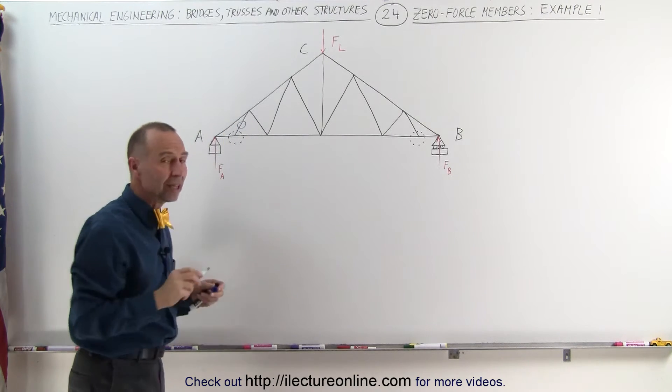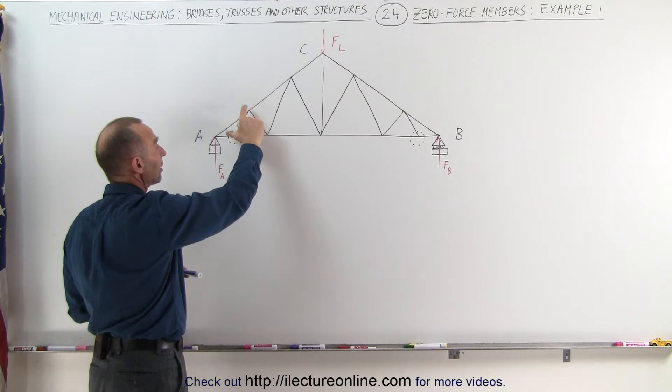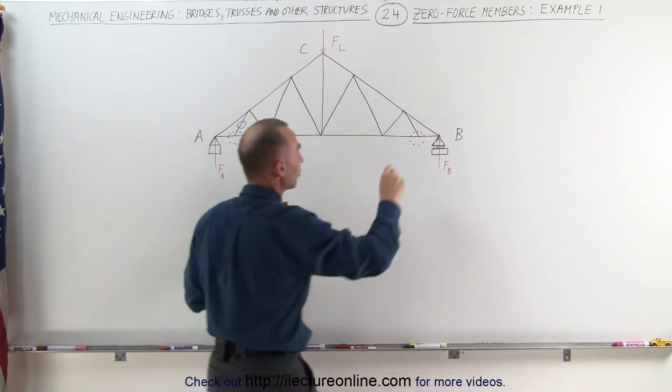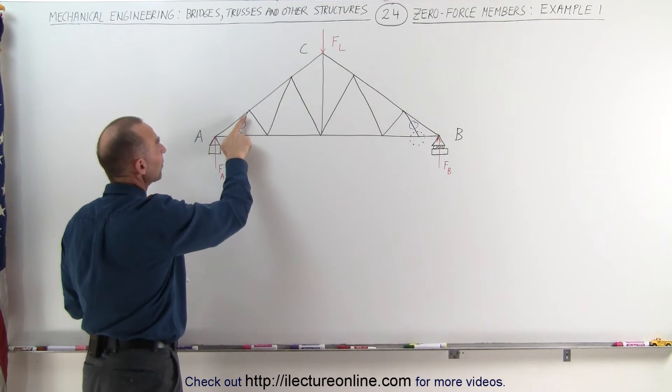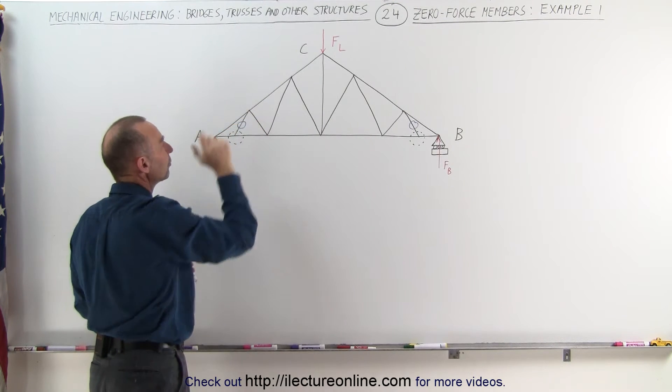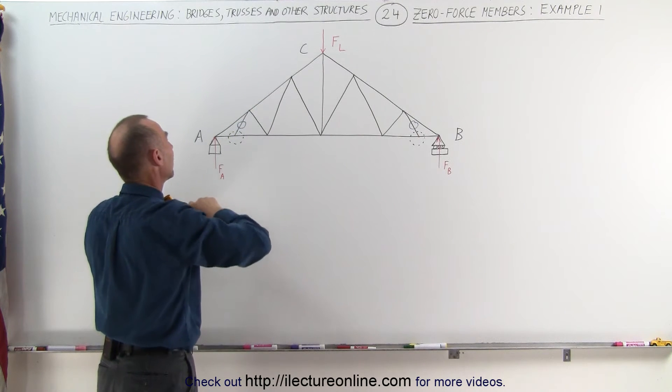Now the interesting thing is, now that we've eliminated this member here, because this is now a zero force member, and of course we have symmetry on the other side, you can now interpret this as this member not being there. So if you remove this member for a moment, then when you look at this joint in this case,